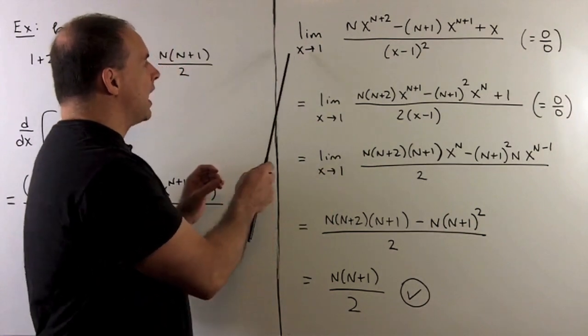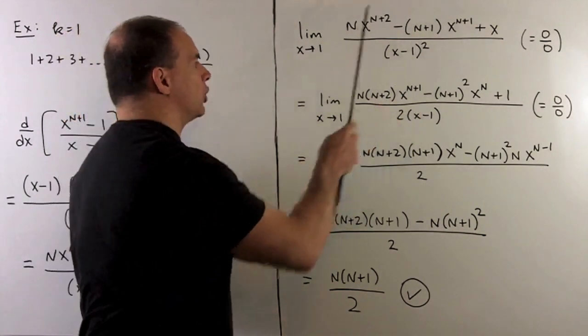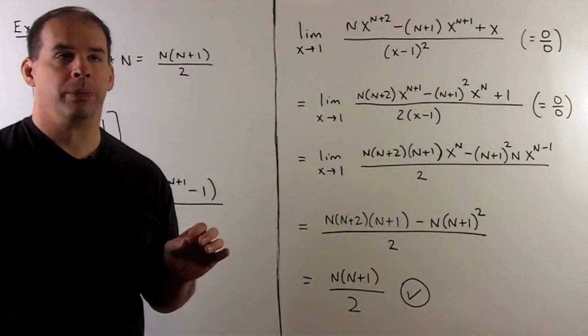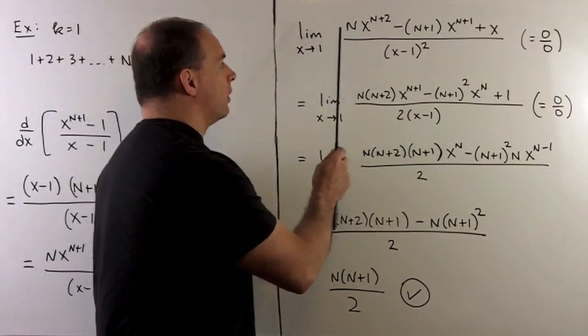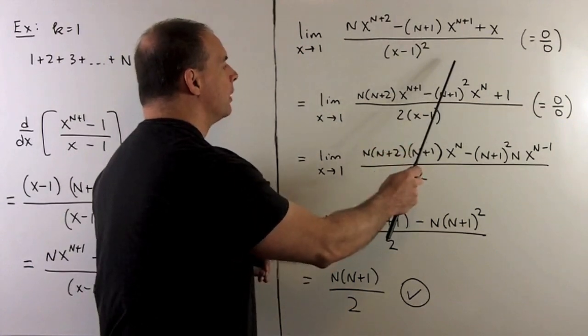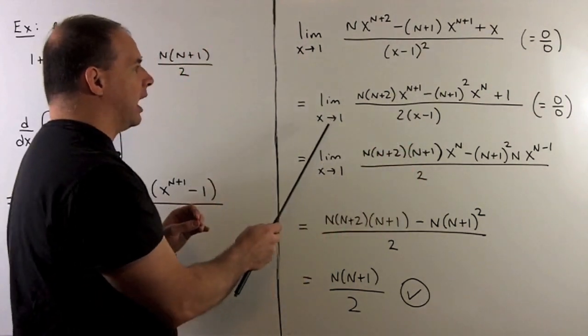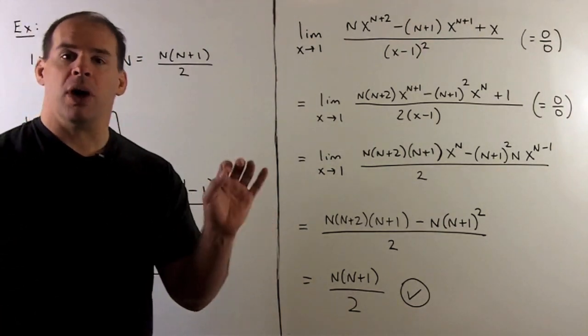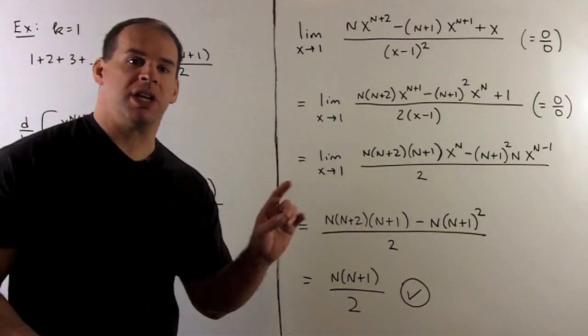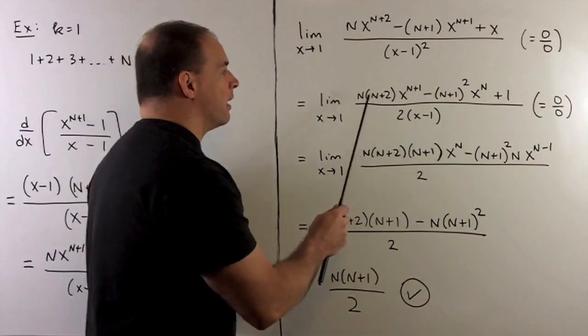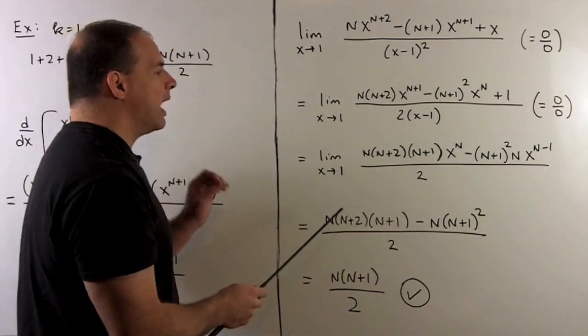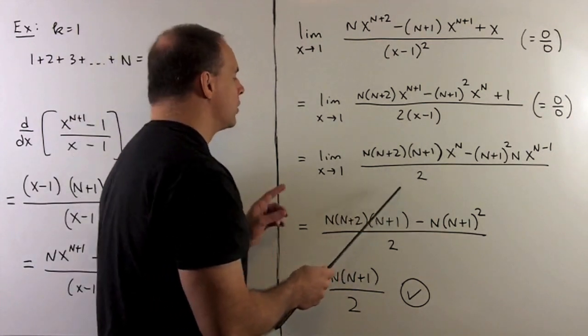If we set x equal to 1 in our function, I get 0/0, which means we can try L'Hôpital's rule. So I take the derivative of the numerator and denominator and try to evaluate at 1 again. We had 0/0, so I try L'Hôpital one more time. Take the derivative of numerator and denominator, evaluate at 1, then we have a number over a non-zero number, so that's going to be our limit.